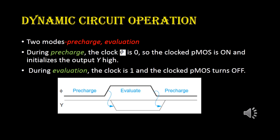In a dynamic circuit, the PMOS transistor is connected to a clock signal. There are two modes of operation: pre-charge mode and evaluation mode. During pre-charge mode, the clock value equals 0, so the PMOS transistor is in the on state. During evaluation mode, the clock equals 1, so the PMOS transistor is in the off state. The graph shows that during pre-charge the output Y is high, during evaluation mode it is low, and during pre-charge it becomes high again.